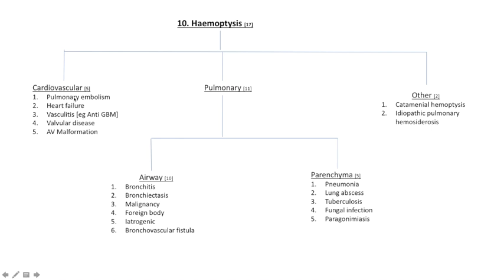Looking at the cardiovascular causes, pulmonary embolus is of course a big cause of hemoptysis — it is especially important to inquire about a history of DVT or any thrombophilia that may predispose to this. Heart failure can cause it as well. Vasculitis causes include Goodpasture's disease, otherwise called anti-GBM, granulomatosis with polyangiitis, eosinophilic GPA, and MPA. Valvular disease, especially in the setting of mitral stenosis, and arteriovenous malformations are also cardiovascular causes — so those are five cardiovascular causes.